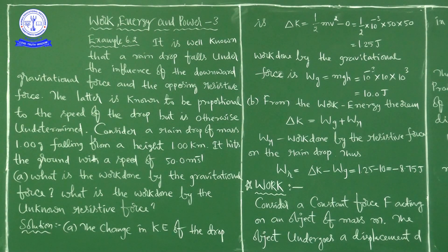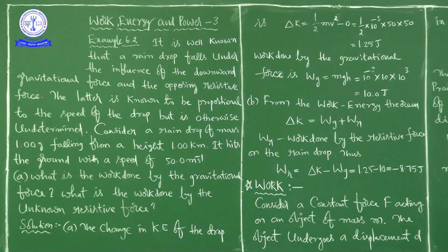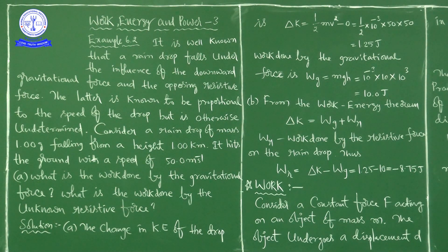It is well known that a raindrop falls under the influence of the downward gravitational force and the opposing resistive force. The latter is known to be proportional to the speed of the drop but is otherwise undetermined. Consider a raindrop of mass 1 gram falling from a height of 1 kilometer. It hits the ground with a speed of 50 meters per second. Now let's observe what is given and what we need to find.